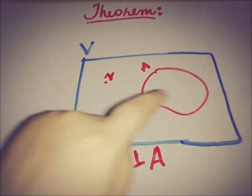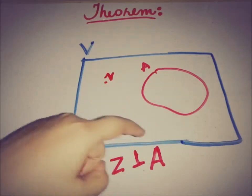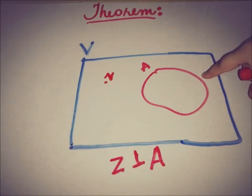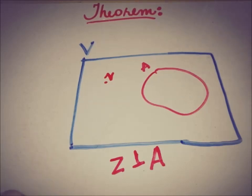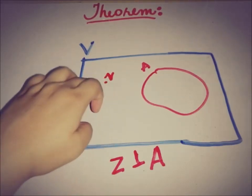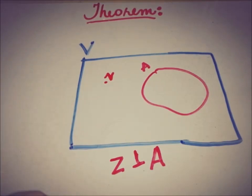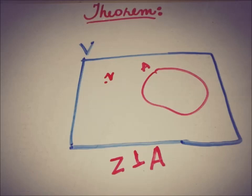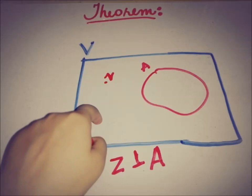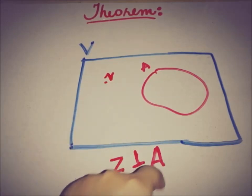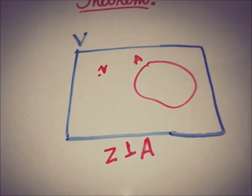To restate: if we have an inner product space and a complete subspace A of that inner product space, the claim is that there exists a non-zero vector z in V such that z has the property of being perpendicular to A. We are looking for this type of element in V. Let's start the proof.